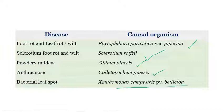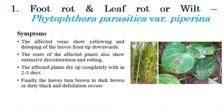Now we will see each one in detail. The first one is foot rot or leaf rot or wilt, which is caused by Phytophthora parasitica var. Piperina. On the right side we can see the symptoms initially — brown to dark brown color dirty lesions appear on the foliage.